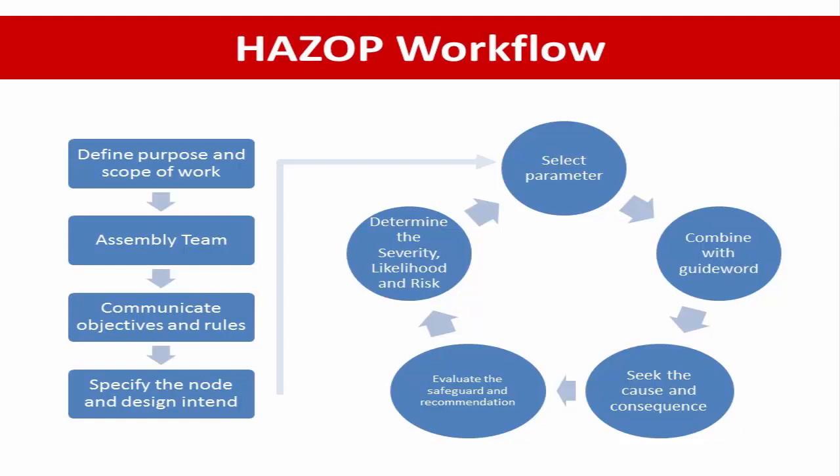Next, review and ensure all causes of deviation have been considered. Go back to the keyword combination with the parameter to give credible deviations, then move to the next parameter to be considered. Once everything is finished, we can say this node is complete.